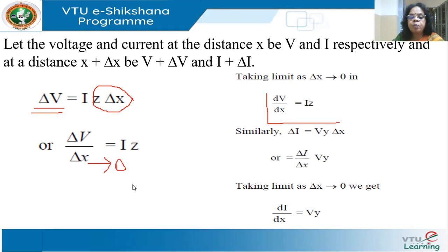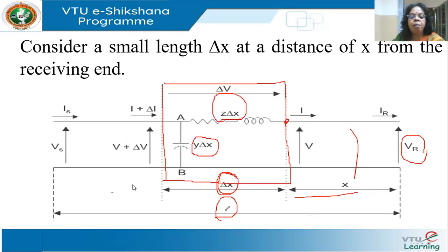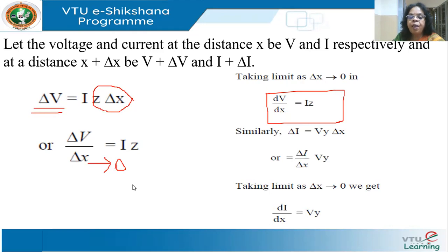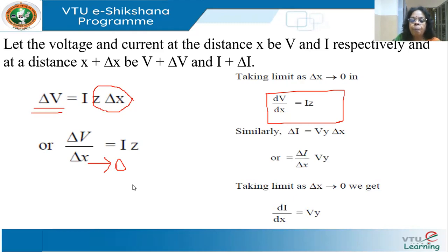Similarly, the current drawn by the capacitance: the voltage across it is approximately V (since delta X is very small), so the current drawn is V·Y·deltaX. Therefore delta I = V·Y·deltaX, meaning delta I divided by delta X equals V·Y. Taking the limit as delta X goes to 0, this becomes dI/dX = V·Y. So we have dV/dX = I·Z and dI/dX = V·Y — these describe how voltage and current vary with distance.